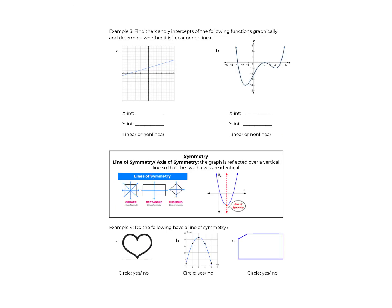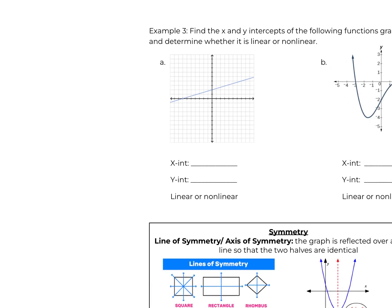You can also find x and y-intercepts using a graph. Looking at the first graph, we have one intercept on the x-axis and one on the y-axis. The x-intercept is the one that crosses the x-axis, and the y-intercept crosses the y-axis — y goes up and down, x goes left to right. So the x-intercept is at (−7, 0) and the y-intercept is at (0, 2). You can tell this is a straight line all the way across, so this is linear.